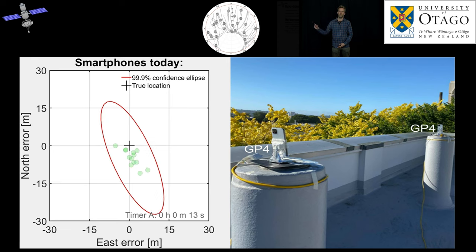On the left-hand side, for each second of data, the green dots correspond to the location that you would obtain in your smartphone today. And as we can see, the locations deviate several meters from the true locations.